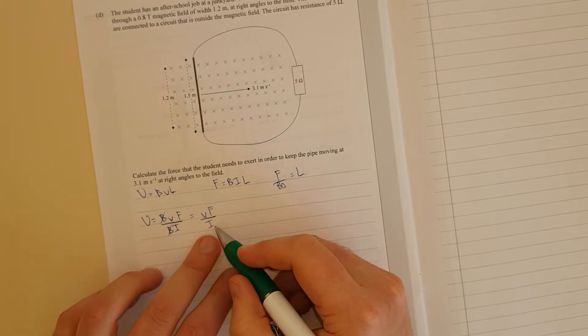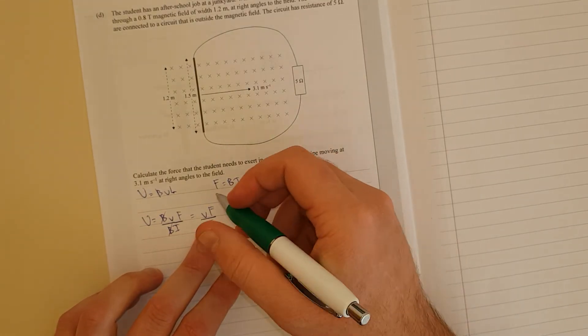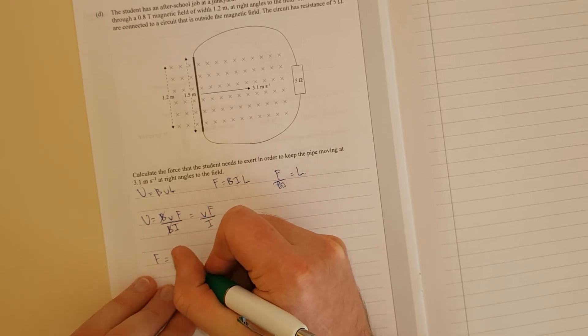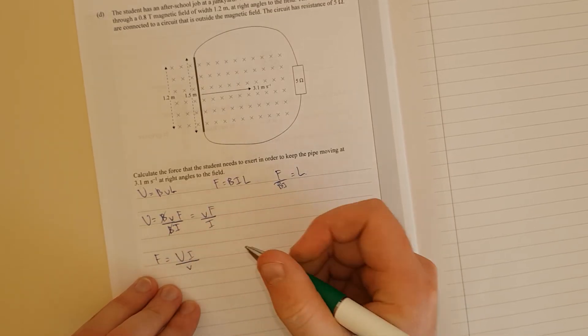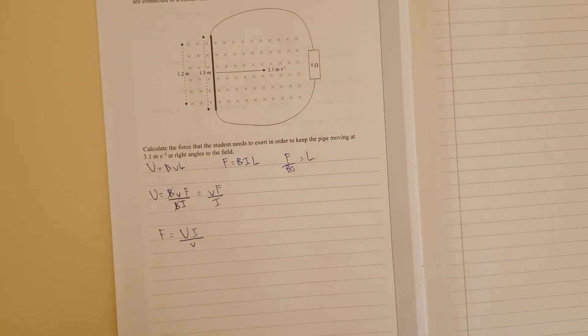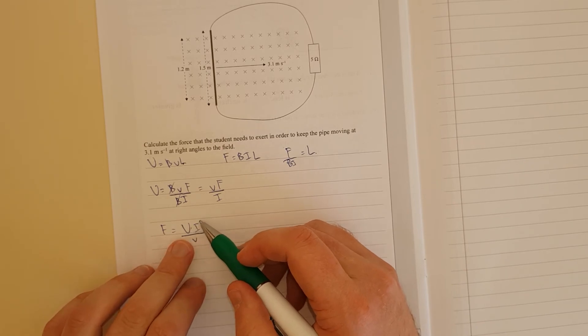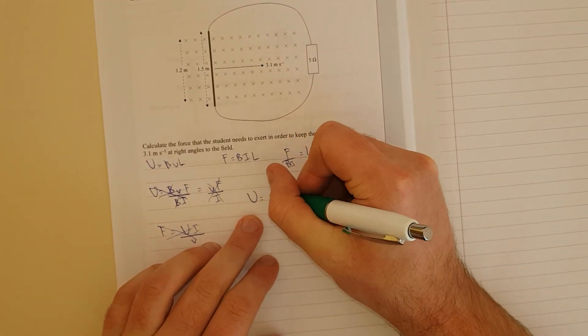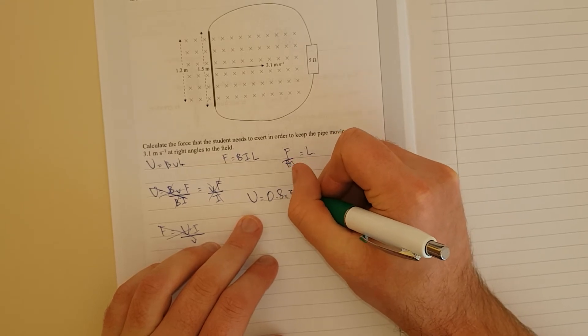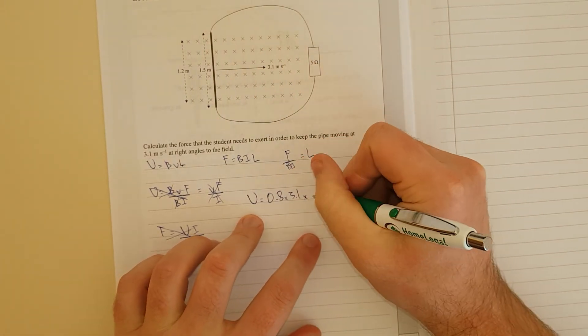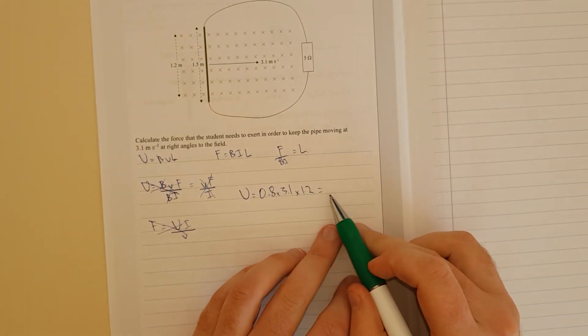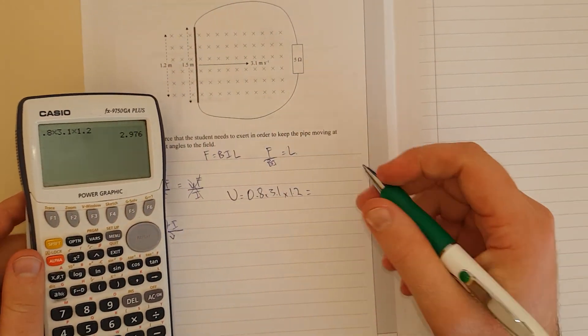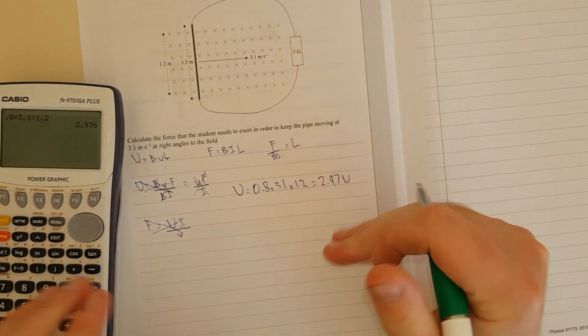We're going to move the current to the other side and the velocity. So I'm going to rearrange for force. Force is equal to the voltage times the current times the velocity. Turns out I don't have the voltage. I'm going to have to work backwards again. I was trying to be sneaky and do some algebra. I'll just find out what the actual voltage is. It's 0.8 times 3.1 times 1.2 because that's actually inside the field. So the voltage is going to be 2.97 volts here.